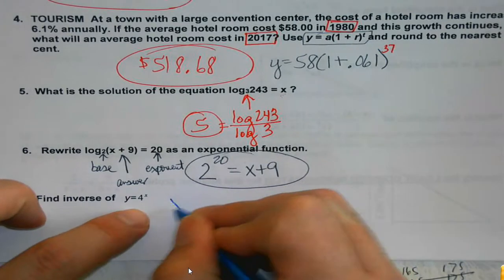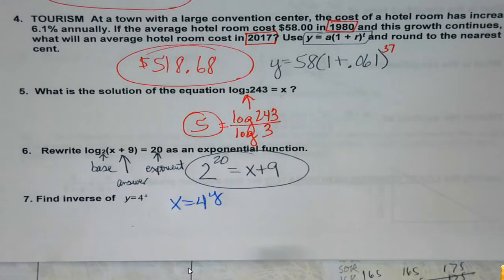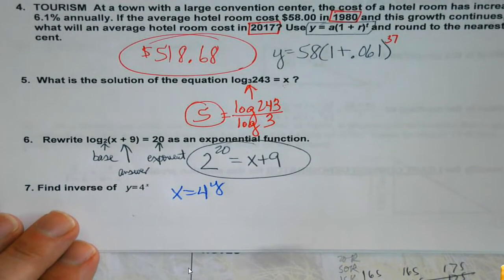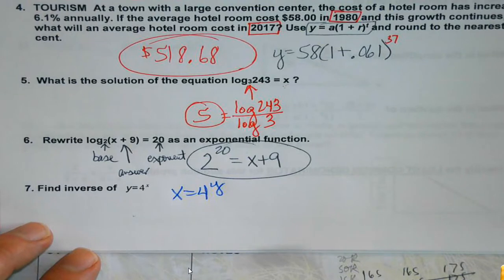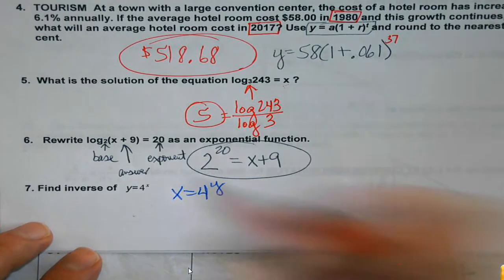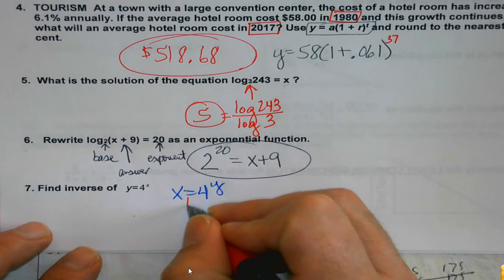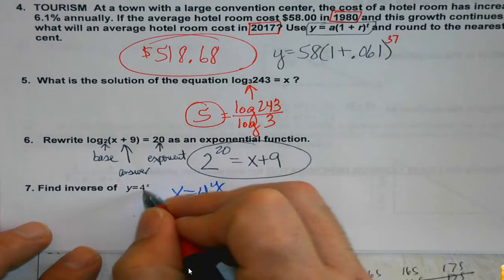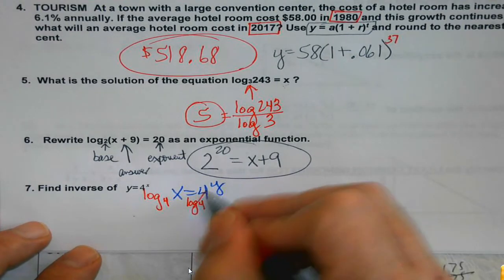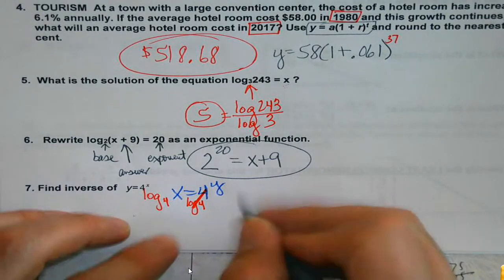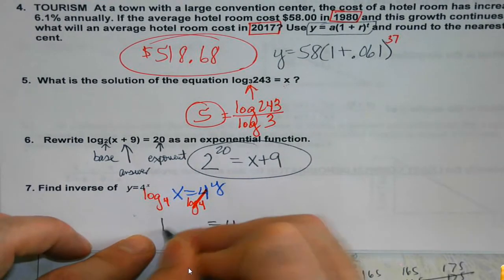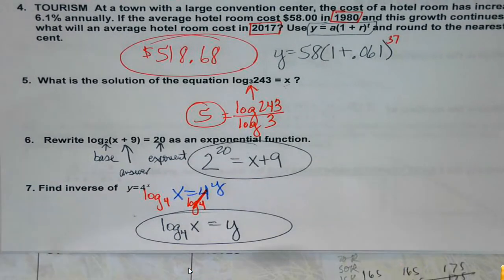Inverse — done it a bunch. Switch x and y, and we're going to be solving for y. I cannot divide by 4, so how am I going to get the 4 out of there? What have we just been doing in the last two problems? Logs. Use the log of that base to get the 4 out, which gets me to y — then I just write what's left. Once y is by itself, we've found the inverse.